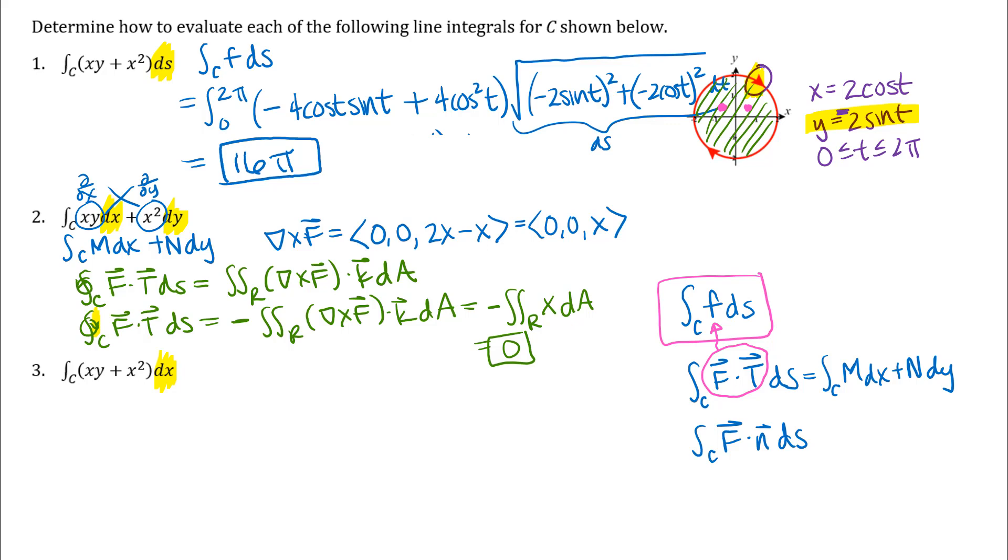Alright for this last one here there are a couple ways I could do that I could just do similar to how I did problem one and then in place of dx I'll just be putting my dx from my equation of my curve so dx would be negative 2 sine t dt so I could do it that way or I could also think about this as really either a work or a flux integral and use Green's theorem for that.